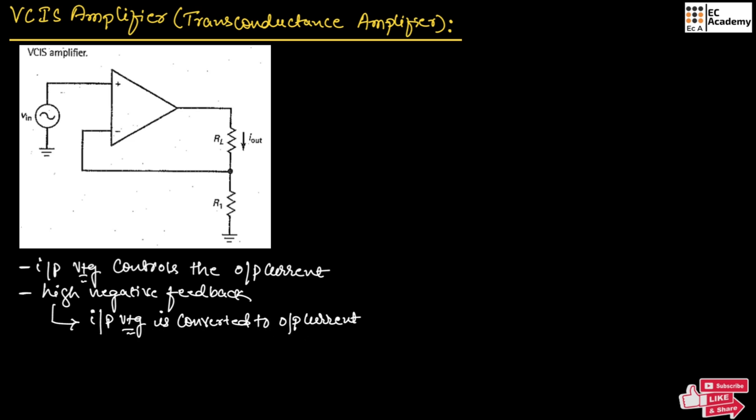This figure shows the VCIS amplifier. Here, the output current is measured across resistor RL.